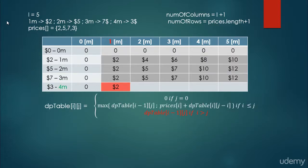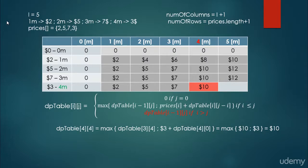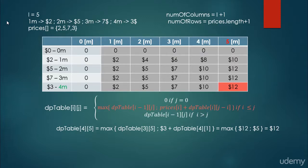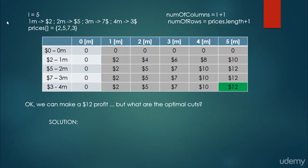For row 4 with column index 1, since row index 4 is greater than column index 1, we copy from above. Similarly, we copy for column indices 2 and 3. At column index 4, since i equals j equals 4, we use the max equation. For column index 5, with row index 4 and column index 5, we calculate and conclude that we can make a $12 profit.